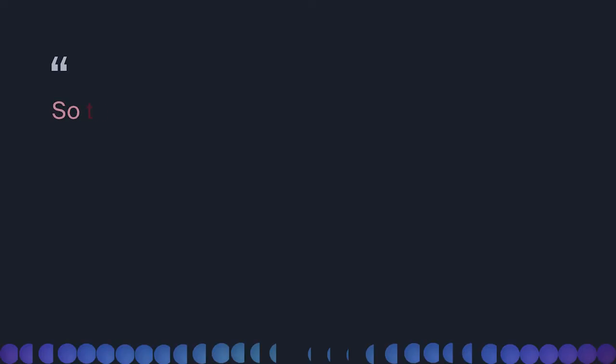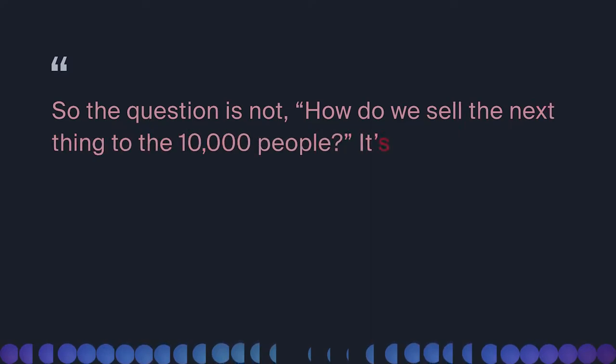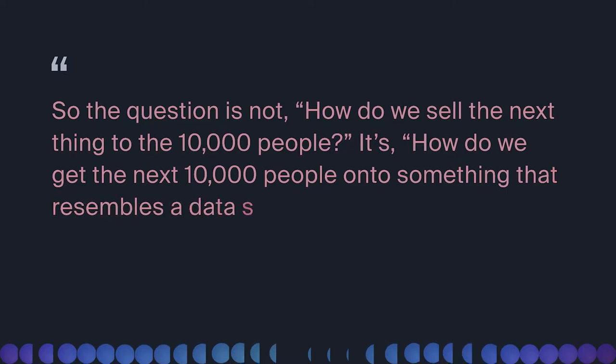There are two things to think about in the data world today — both are massive but very different opportunities. Opportunity number one: those 10,000 companies have data observability problems, speed and latency issues, and they need to move pipelines from batch every 24 hours to real time. There's a big opportunity for those companies around productionizing and scaling. But the other end of the spectrum — which I don't see enough conversation around — is how do we get the next 10,000 or 90,000 companies onto something that resembles a data stack, even if it's super basic?